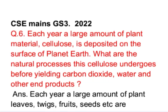This is question number six from GS Paper 3 of Mains 2022 examination. Each year a large amount of plant material cellulose is deposited on the surface of planet Earth. What are the natural processes this cellulose undergoes before yielding carbon dioxide, water, and other end products?